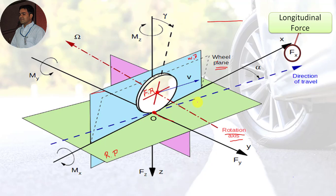The next term is longitudinal force FX. This is the component of the force acting on the tire by the road, in the plane of the road and parallel to the intersection of the wheel plane with the road plane. It is the component of the longitudinal force acting on the whole vehicle — the force component in the direction of wheel travel.